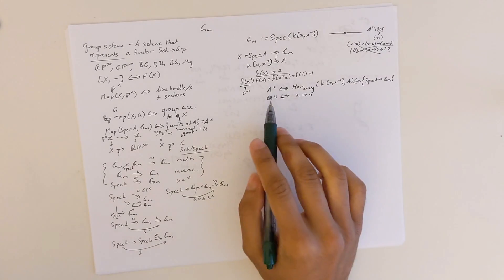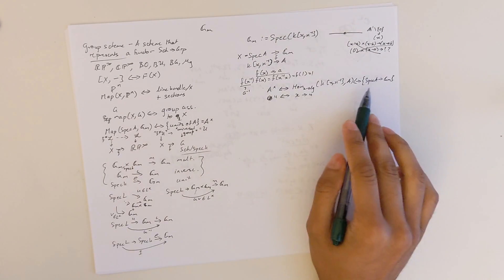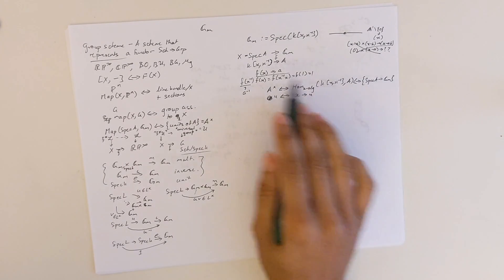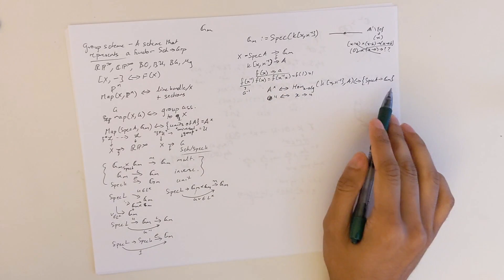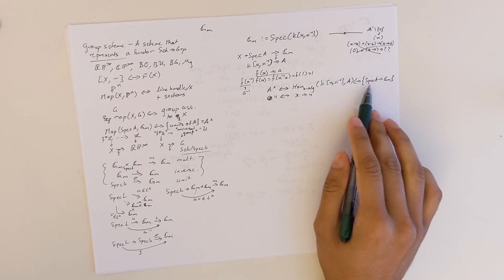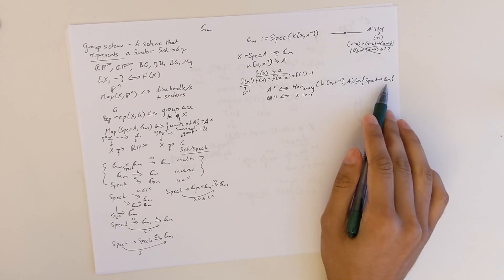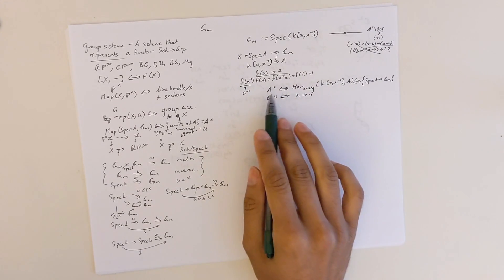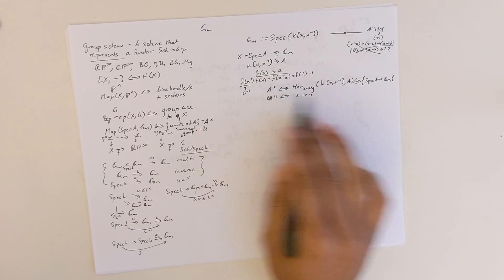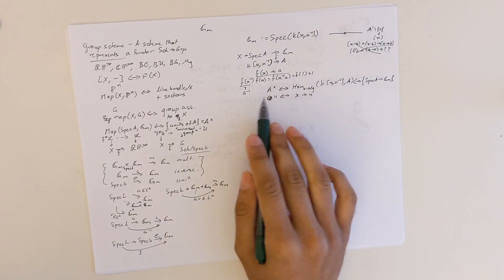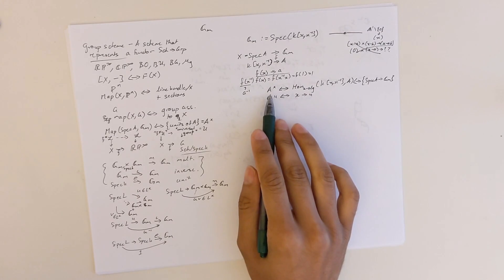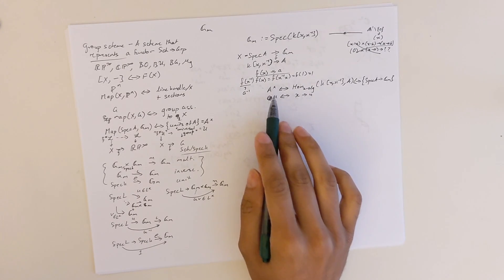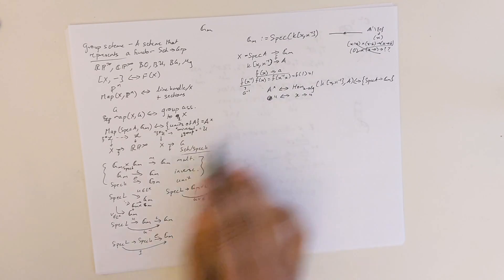Conversely, if you have a unit of the ring A, then that uniquely defines a map from k[x, x⁻¹] to A. So the units of A are in one-to-one correspondence with the set of ring homomorphisms as k-algebras from k[x, x⁻¹] to A, which is also just the set of maps from spec A to G_m.